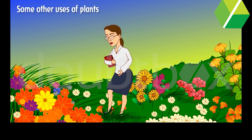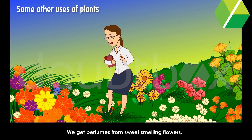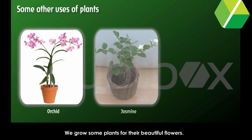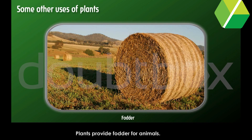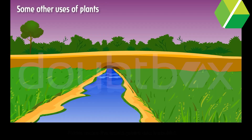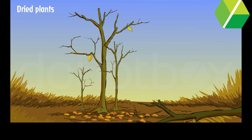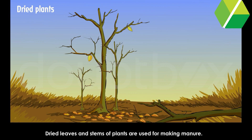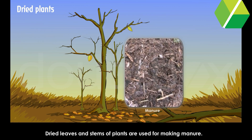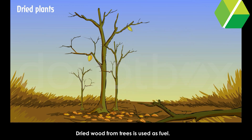Some other uses of plants: We get perfumes from sweet-smelling flowers. We grow some plants for their beautiful flowers. Plants provide fodder for animals. Plants make the world green and beautiful. Dried leaves and stems of plants are used for making manure, and dried wood from trees is used as fuel.